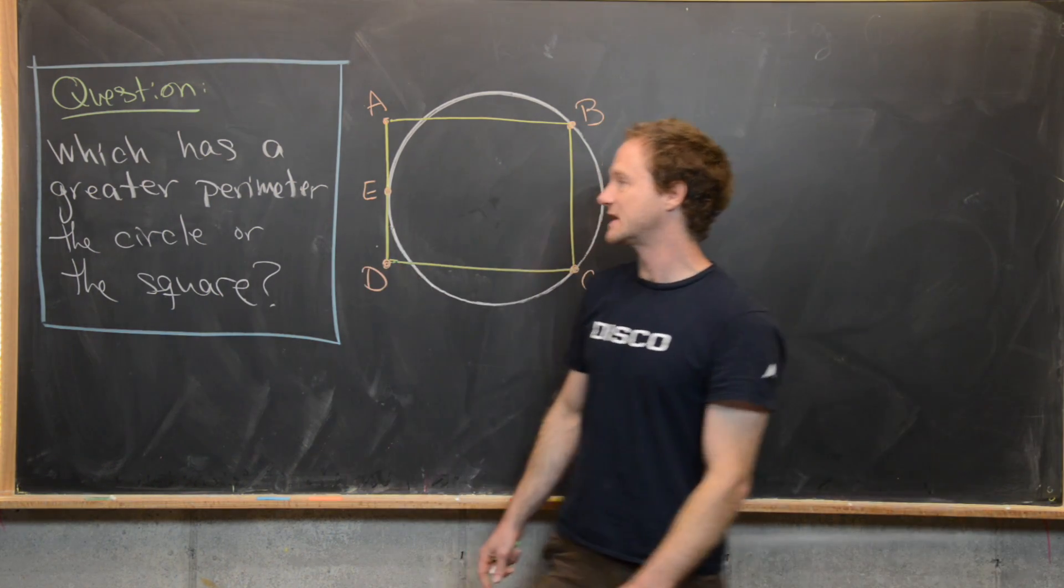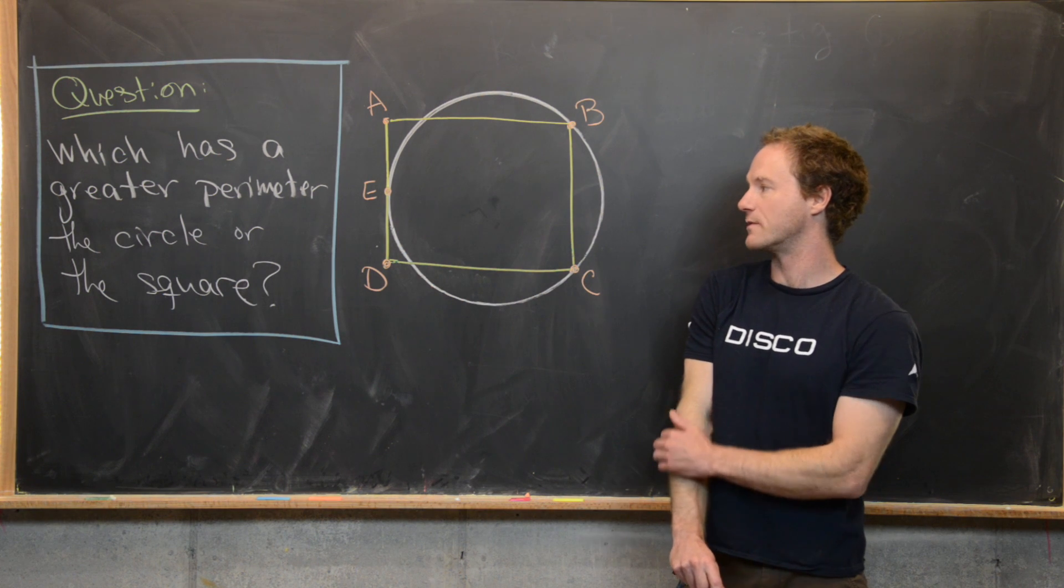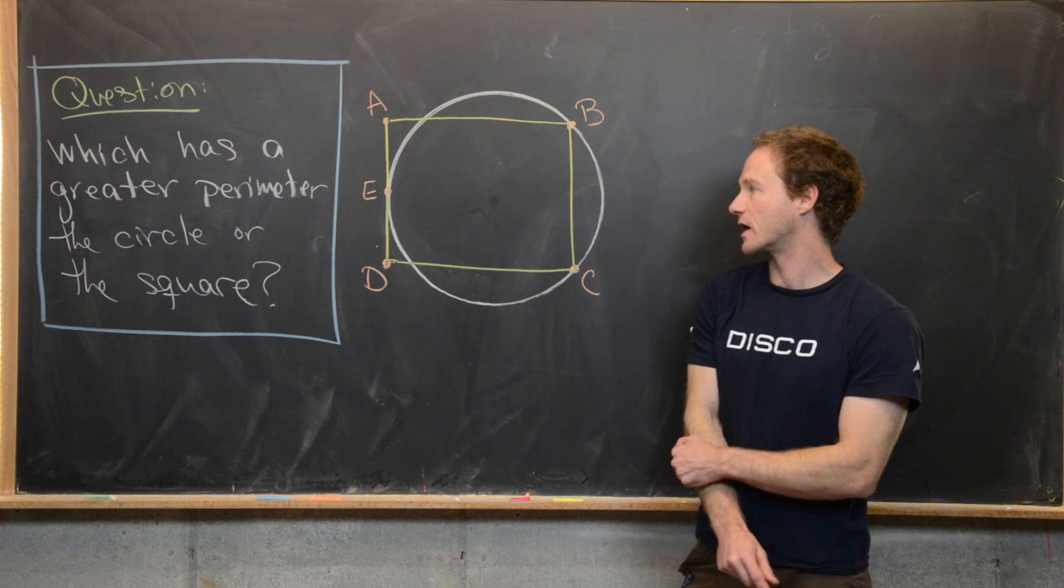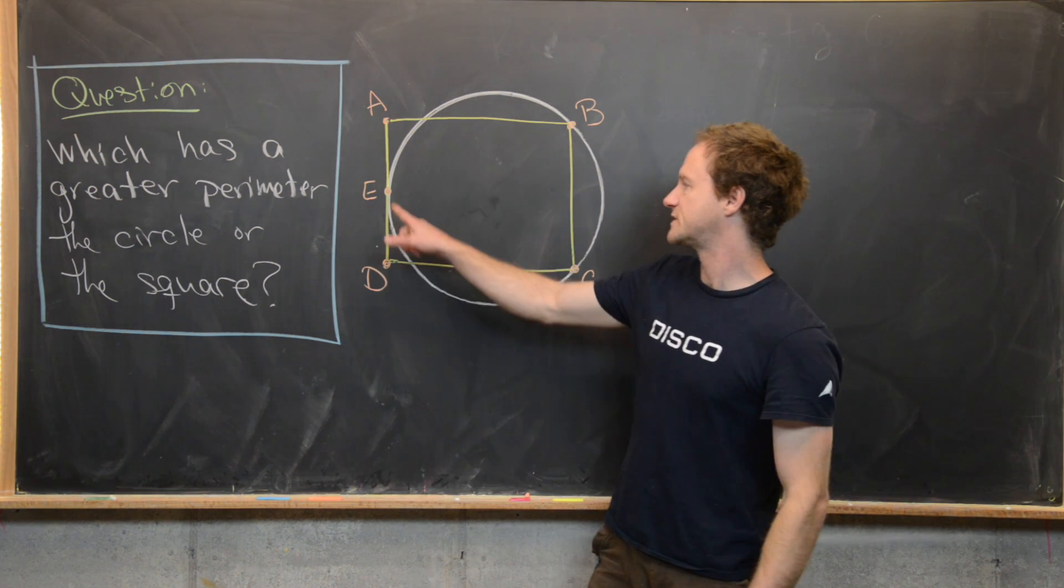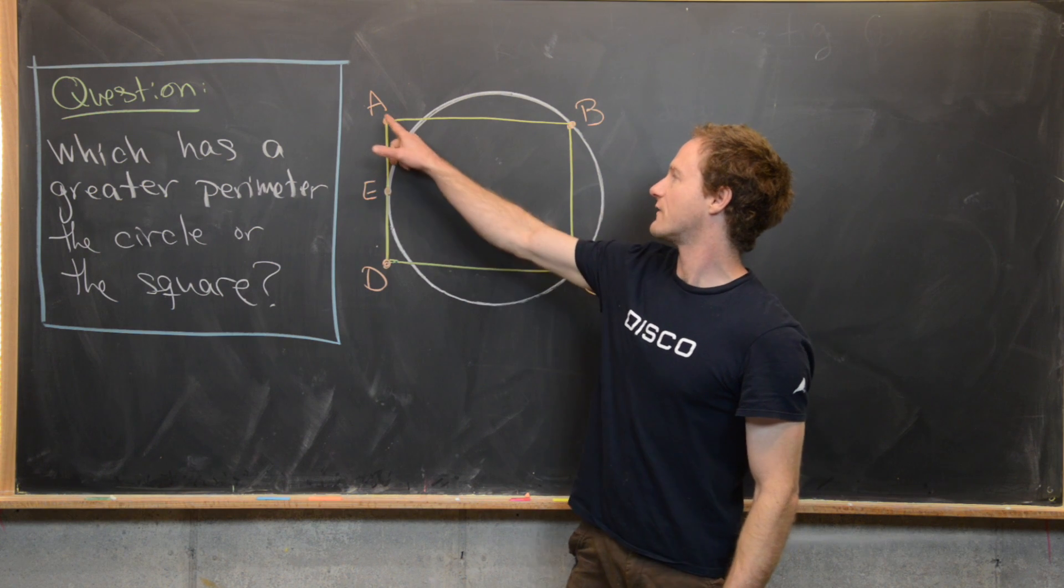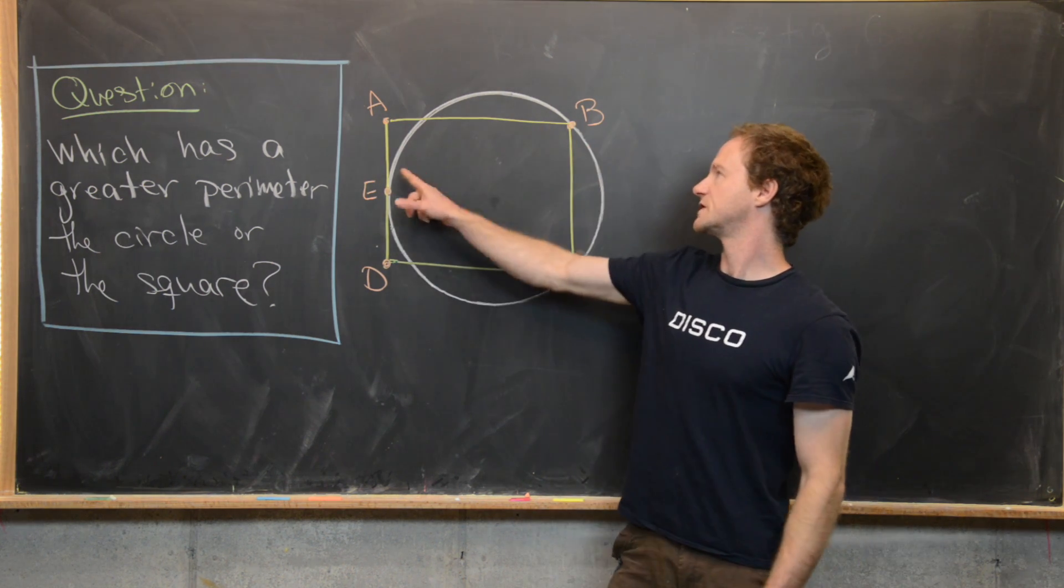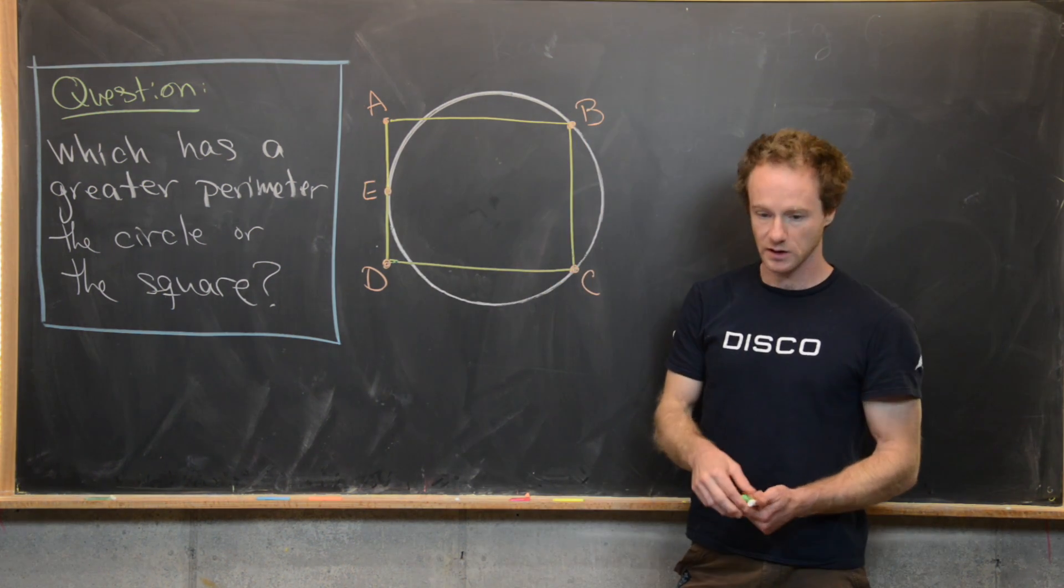The question we want to answer is which has the greater perimeter, the circle or the square. In other words, if we start at this point E, traveling around the yellow versus traveling around the white, which one takes longer?